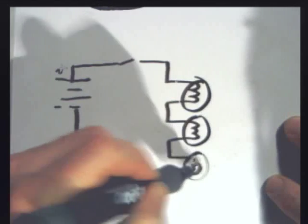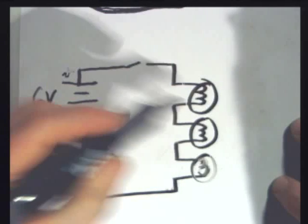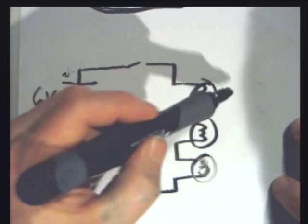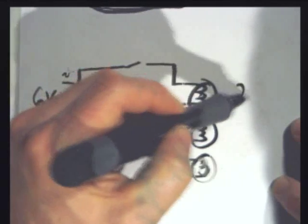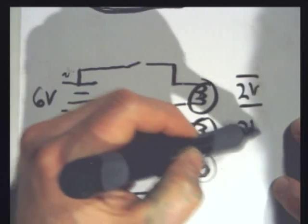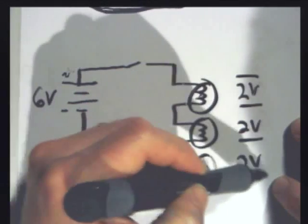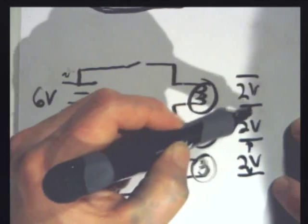Anyway, if this is a 6-volt battery and these are identical bulbs, then I'd have a 2-volt drop across this bulb. 2-volt drop across this bulb. 2-volt drop across this bulb. 2 plus 2 plus 2, that's 6.